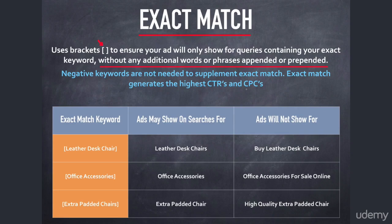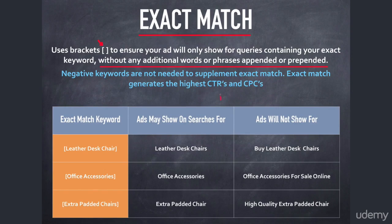Those two things go hand in hand. If a keyword gets a higher CTR — meaning the ratio of people searching and clicking your ad is higher — that generally means it's a good keyword, and other advertisers will also bid more aggressively on it. So as CTR goes up, you'll usually see CPCs go up as well, because the market realizes these are really good keywords bringing in high quality traffic.